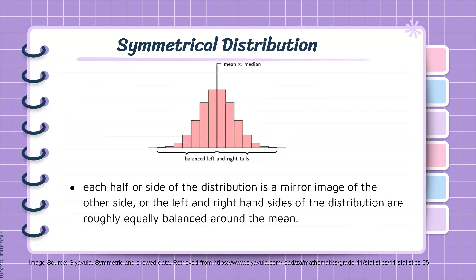Symmetrical distribution has a shape that is identical on both sides of the central point, meaning each half or side of the distribution is a mirror image of the other side. Or we can say that the left and the right-hand sides of the distribution are roughly equally balanced around the mean. A common example of this is a normal distribution, where the mean, median, and mode are the same.